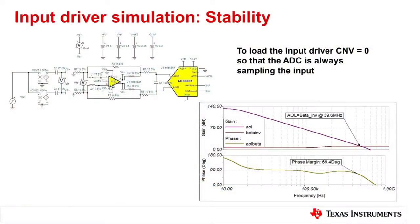Moving on, besides the RC filter, there's the input driver. The good news is that for this particular design for the ADS8881, we have created complete PSpice models for the whole signal chain. This ensures that we have a stable system — the last thing you want is instability introduced into your system. We simulate and confirm more than 60% phase margin and 20 dB rate of closure.